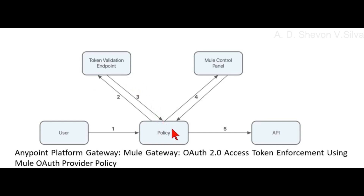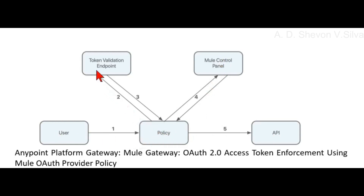The local database is updated with the contracts previously obtained from the Anypoint Platform. The policy verifies whether the client ID has access to the API. If all validations are successfully completed, the request is allowed to reach the backend. In this architecture, the user connects to the policy, which connects to the token validation endpoint; the token validation endpoint connects back to the policy, and the policy interacts with the Mule control panel and then with the API.